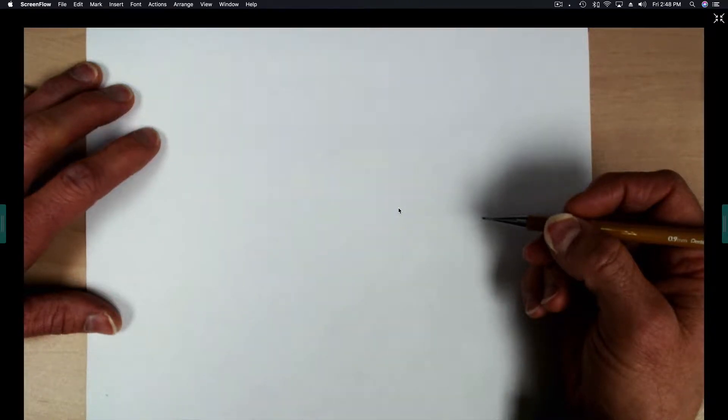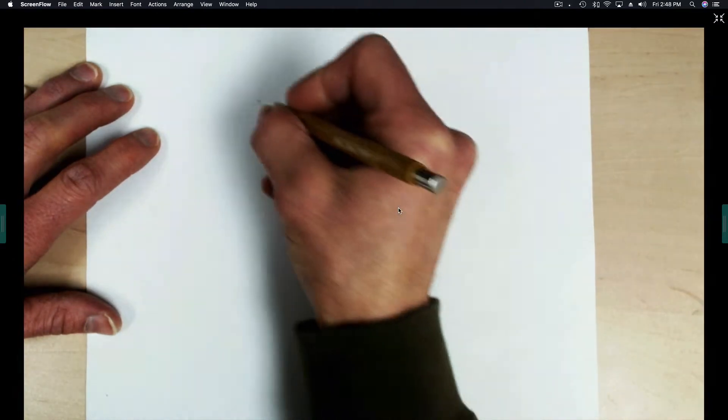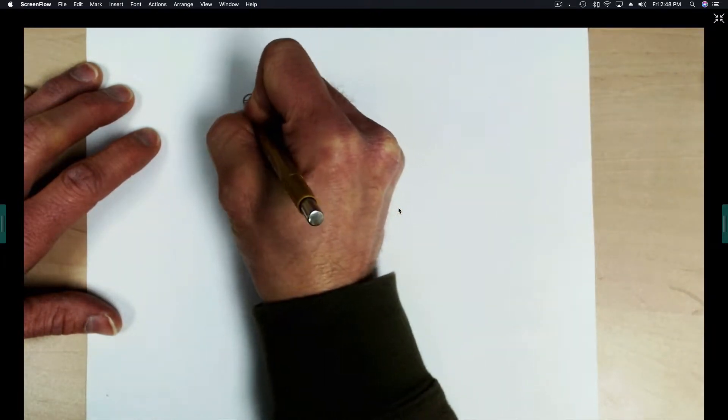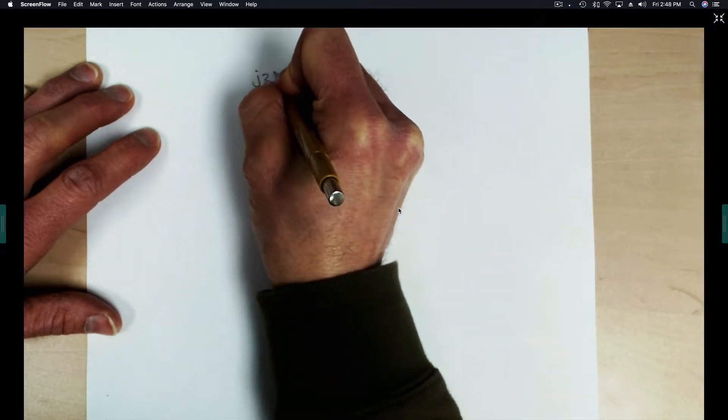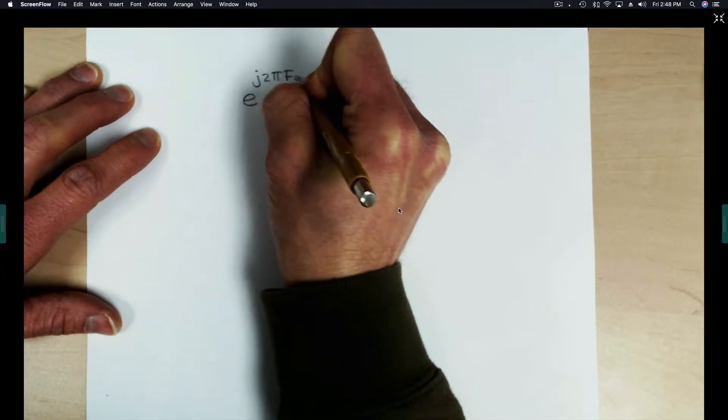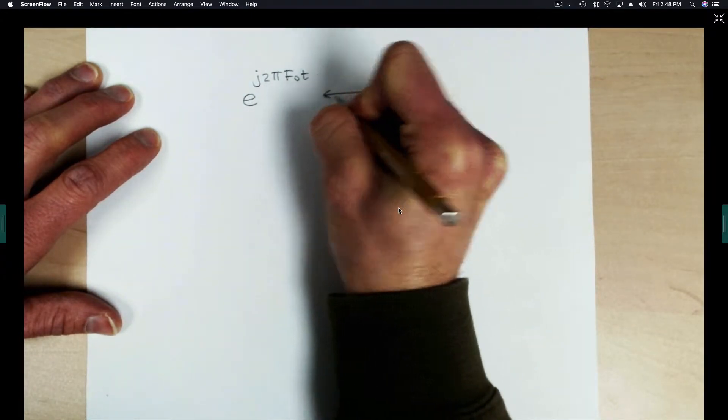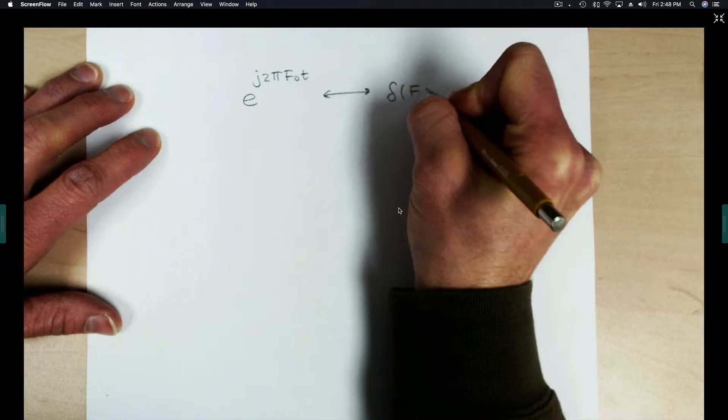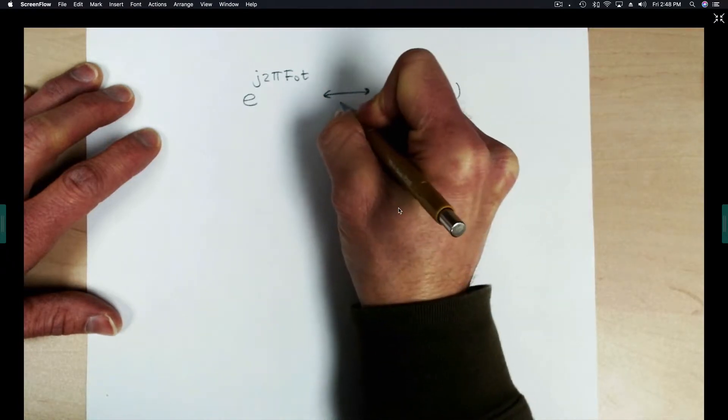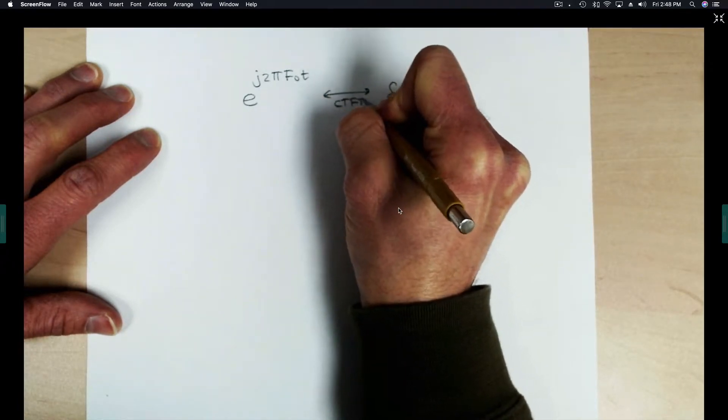This video explains how to compute the Fourier transform of a periodic signal. To begin, let's remember that the Fourier transform of a complex exponential is a delta function, where this is the continuous time Fourier transform.